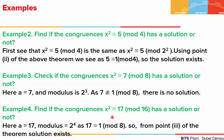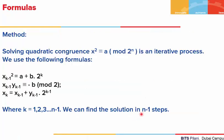Coming to the fourth example, the congruence is x squared is congruent to 17 mod 16. Here a is 17 and 16 is 2 to the power 4, so the third point is used again. Since 17 is congruent to 1 mod 8, the solution of such a congruence exists. Once we find that the congruence is solvable, how do we find the solution?